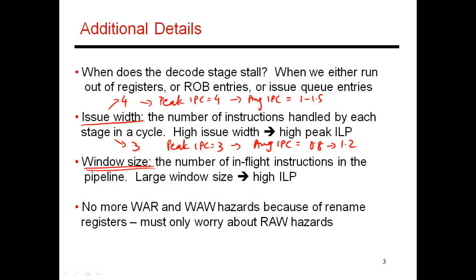The window size represents the number of instructions currently in the pipeline — essentially the size of the reorder buffer and, to some extent, the issue queue. A large window means you can look far into the future, increasing your chances of finding instructions ready to execute in the next cycle. It means you're not limited by immediate data dependencies and can find instructions that don't depend on the very next immediate instructions, increasing the probability of doing something useful every cycle. A large window size results in a much higher average IPC. For example, going from a 40-entry to a 60-entry ROB might increase average IPC from 1.0 to 1.2.